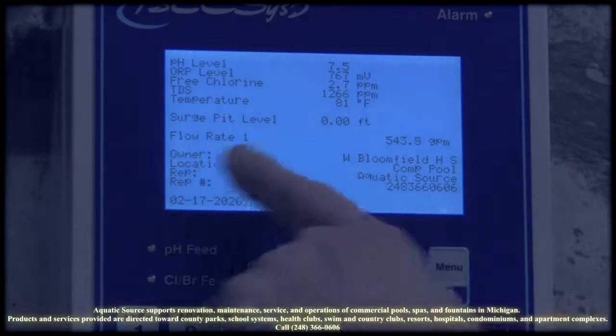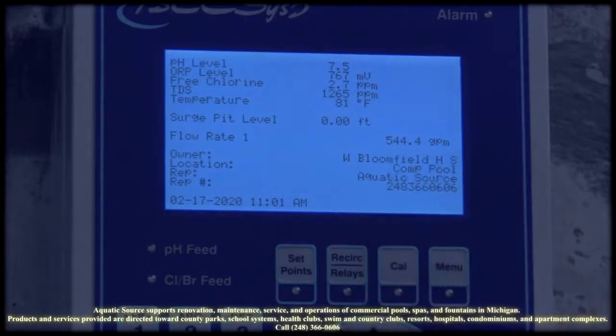We also have the flow rate. You can set that as an alarm also. If the flow rate drops too low, it'll send the operator either a text or an email. It'll also show up on their phone as an alarm.